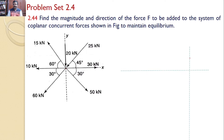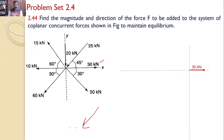I have drawn a separate XY plane. First I will start with the 30 kN force, which is acting along the x-axis, so we need not resolve it — there is no y-component. Now the 25 kN force is acting in a particular direction, so we need to resolve this force. One component will be horizontal and another will be vertical.